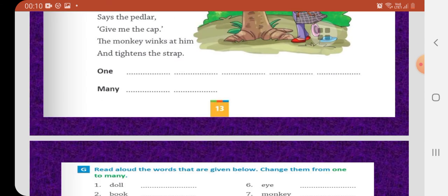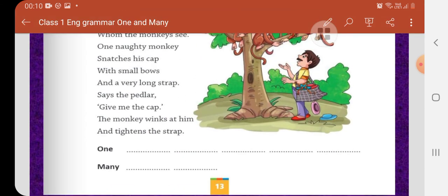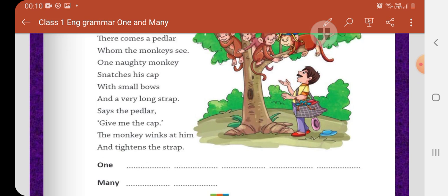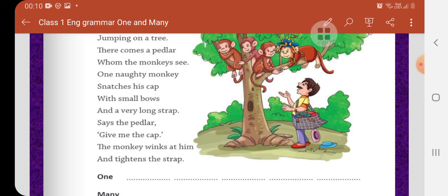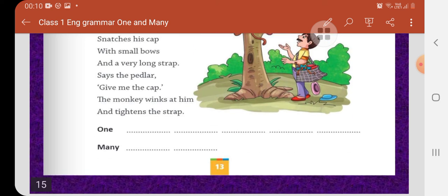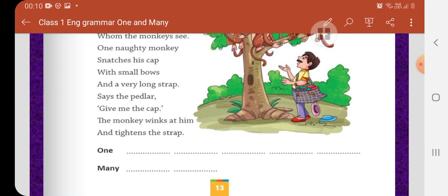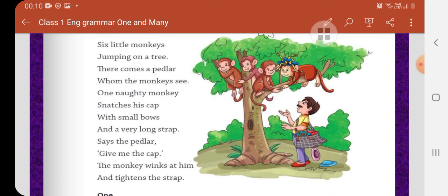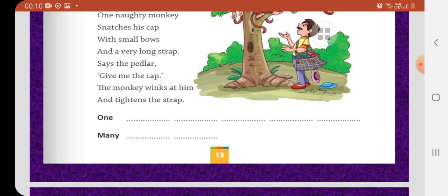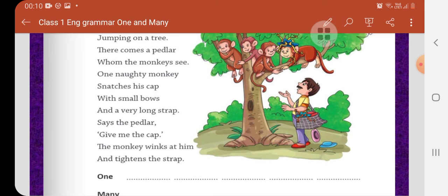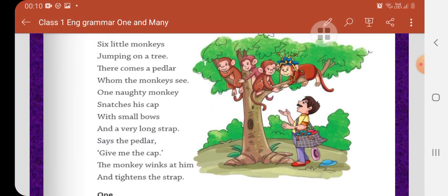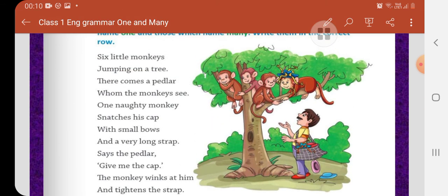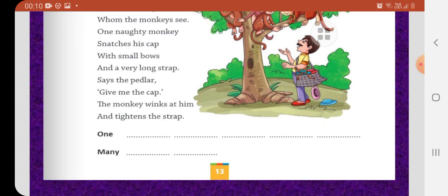So children, you have to circle the naming words. After that, what you have to do, you have to write one and many. Those nouns are singular nouns. Like monkey. Only monkey. So you have to write here monkey. You can write here monkey. Strap. Tree. Cap. And peddler. Those are singular. Those are in one in number. You have to write in the one column. And those are many in number. More than one number. You have to write in the next column. Like monkeys. Monkeys and bows. Monkeys and bows.